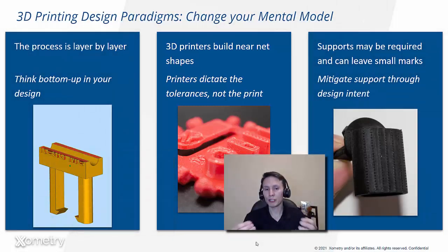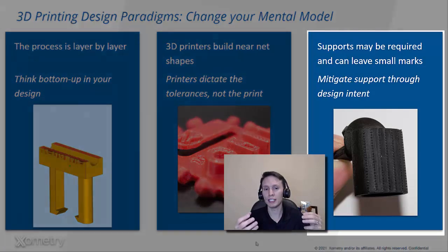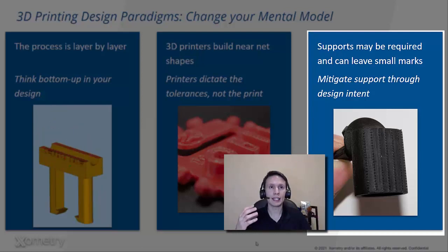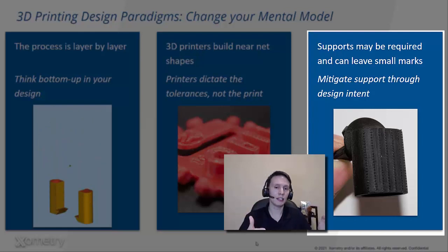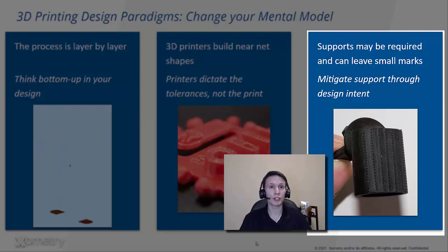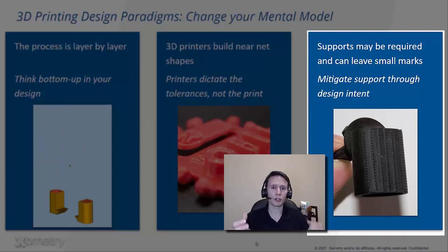The last thing to know is that when you're building something from nothing and you have features that are growing with overhangs, oftentimes you need to build some sort of sacrificial structure called support in 3D printing. That's something very unique to this process and you may see it on some of your prints. Some processes do not require support structures, but when you're thinking about your design intent and even the process you choose, support structures are just very unique to 3D printed processes.